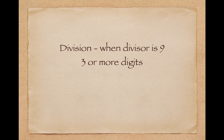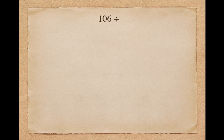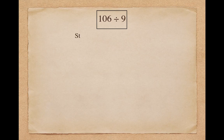Let's take our first example. Suppose I want to divide 106 by 9. As a first step I will have to divide 106 into two parts, as the divisor 9 has only one digit. So 6 goes in the remainder part, and the rest of the digits, 10, goes in the quotient part.